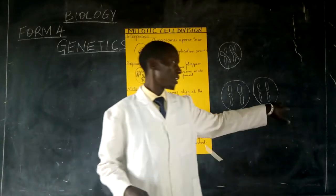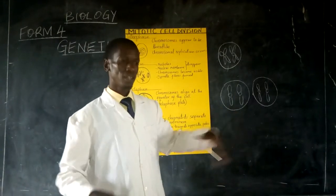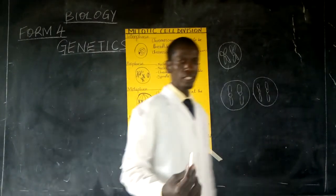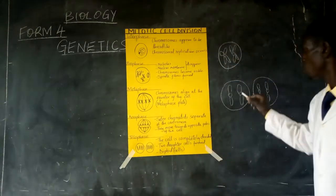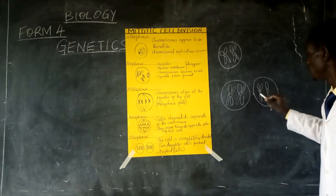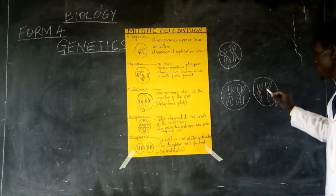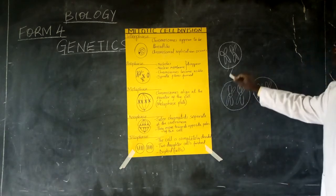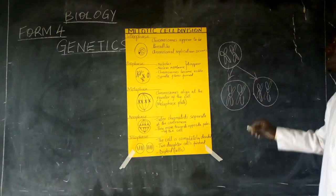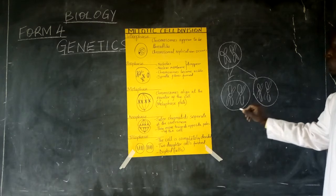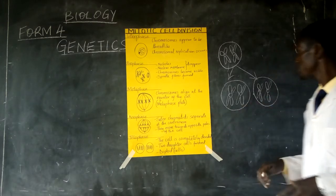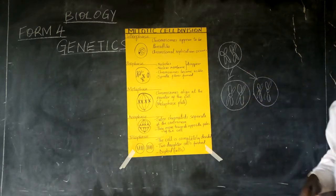This chromatid over here will multiply — we call it replication. It will replicate, hence leading to the formation of a complete chromosome. So when you look at this, you are going to realize that this chromosome, which was the parental chromosome, has segregated — it has divided and resulted into two daughter cells.